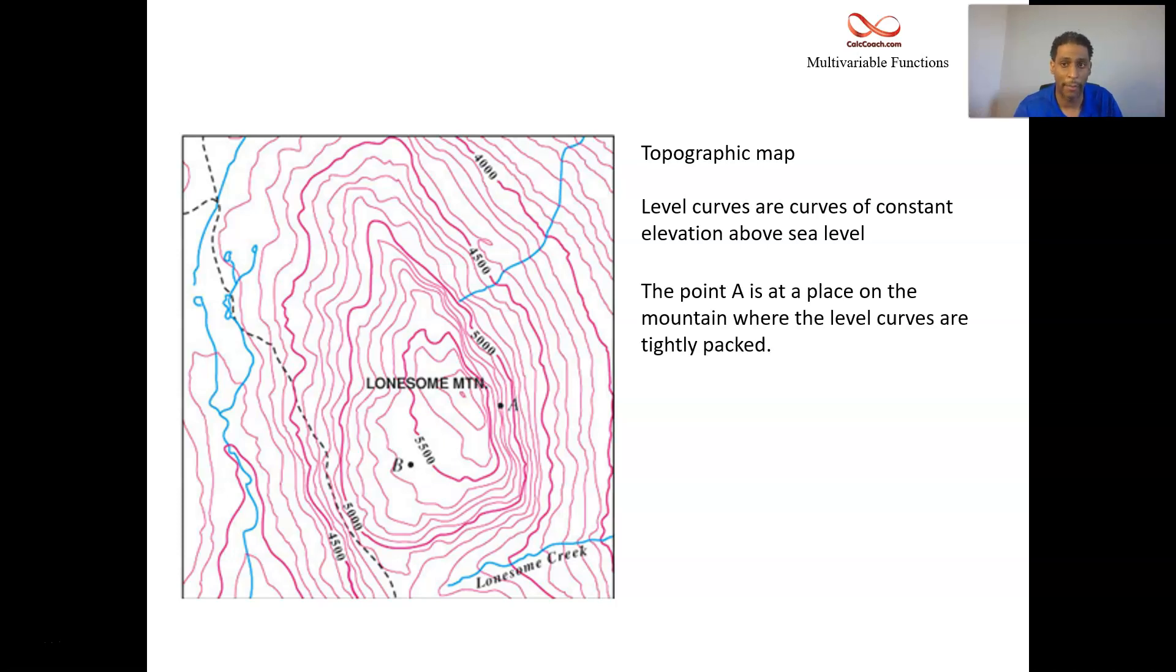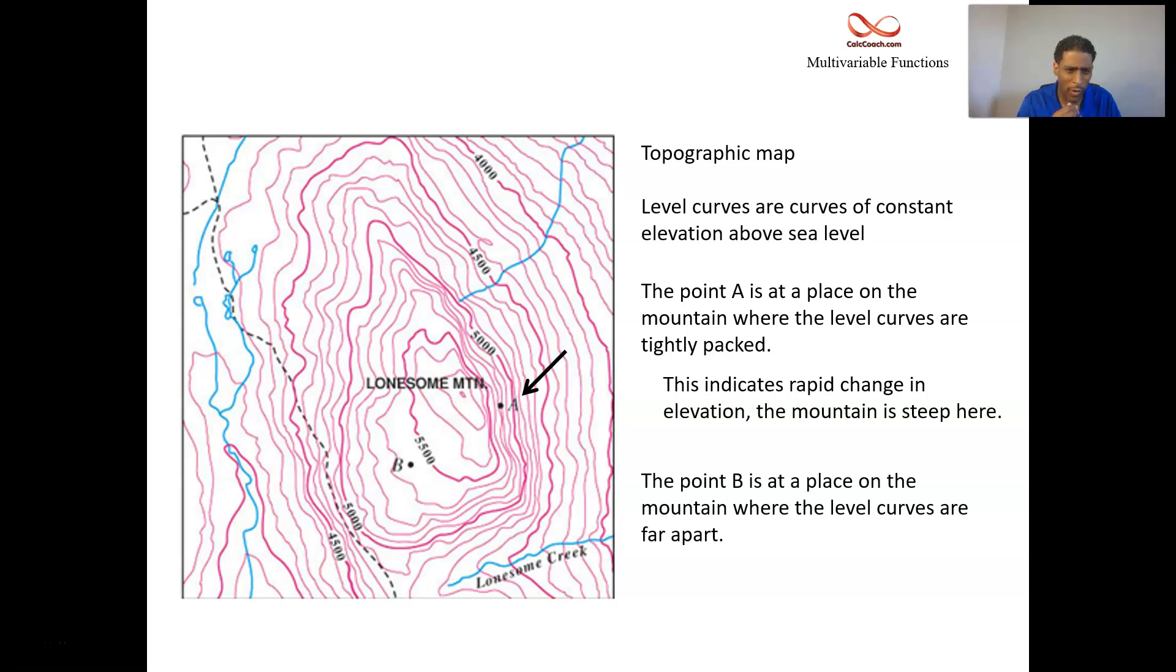If each different level curve represents a different altitude, and I have many different level curves represented nearby my point, that means my altitude is changing rapidly. Point A is at a place on the mountain where the level curves are tightly packed. This indicates a rapid change in altitude. It's like a cliff. But point B, that's not the case. At point B, what we have is just kind of a flat, like a plateau. The level curves are separated, representing a place where the mountain is relatively flat.